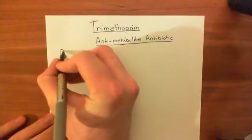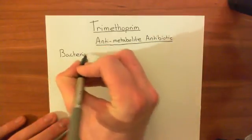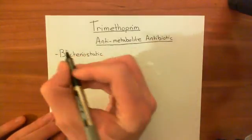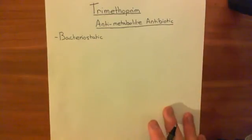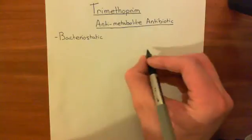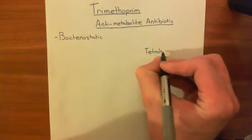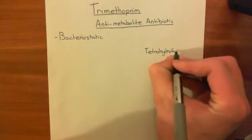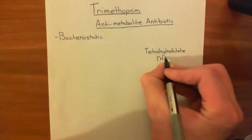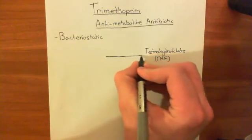So trimethoprim is what would be known as a bacteriostatic antibiotic, meaning that it stops cell division rather than actually killing the bacteria you already have. Now, how does it work? In bacteria, you have to synthesize a molecule known as tetrahydrofolate, often abbreviated to THF, and in order to synthesize tetrahydrofolate, you reduce dihydrofolate.